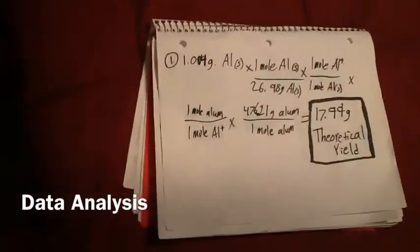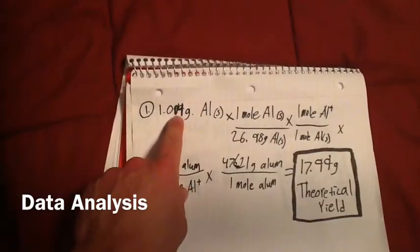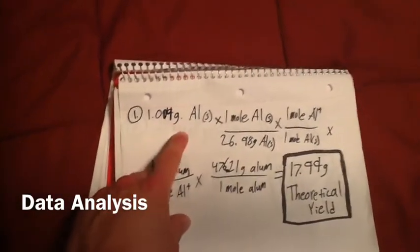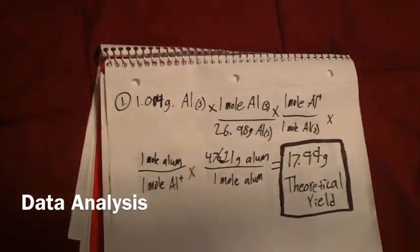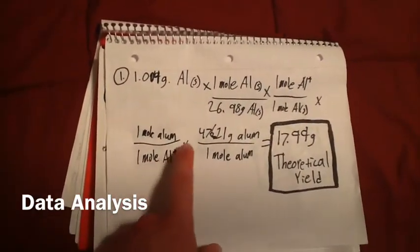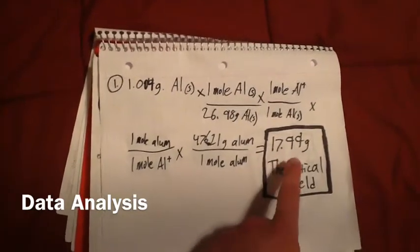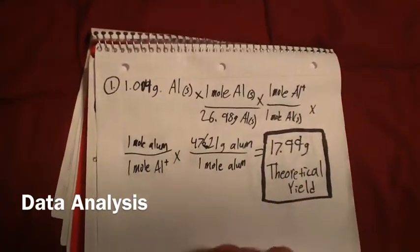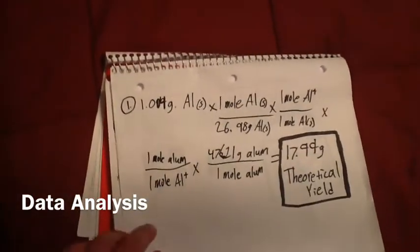To start our analysis for Part A, question number one. The amount of aluminum we started with was 1.014 grams. After a long series of stoichiometry, this led us to our final answer of 17.99 grams, which is the theoretical yield for our alum crystals.